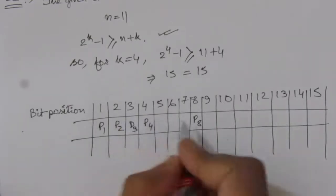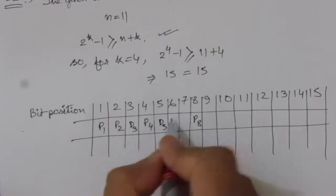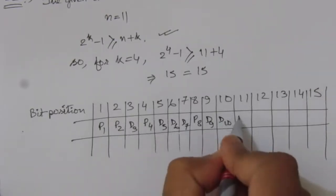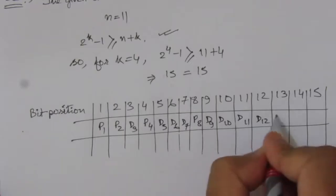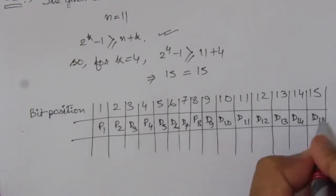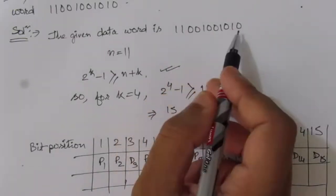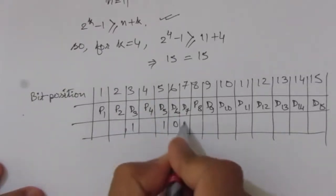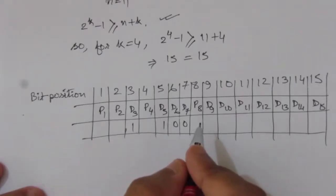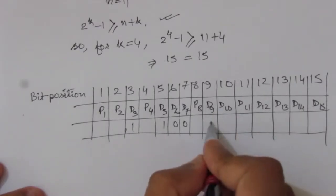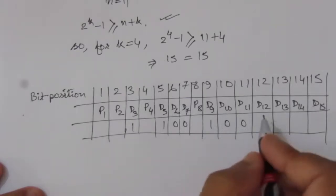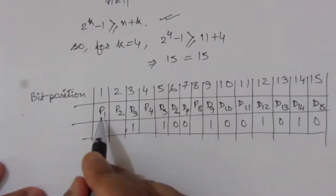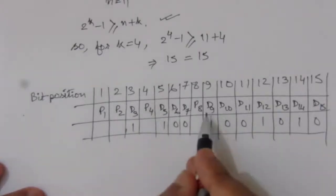The data bit positions are d3, d5, d6, d7, d9, d10, d11, d12, d13, d14, and d15. We fill these with the given 11-bit data word 11001001010, giving data bits: 1,1,0,0,1,0,0,1,0,1,0 in those positions respectively.